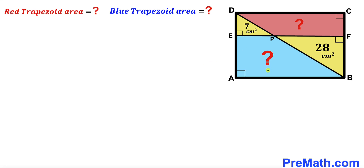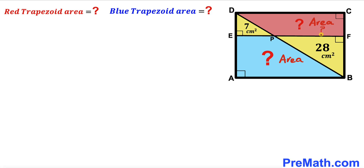Welcome to pre-math. In this video we have got this rectangle ABCD along with this main diagonal BD, as you can see in this diagram. Moreover, we have this line EF, and as a result we get this triangle DEP whose area is 7 cm² and the area of this other yellow triangle PFB is 28 cm². Our task is to calculate the area of this red trapezoid and this blue trapezoid as well.